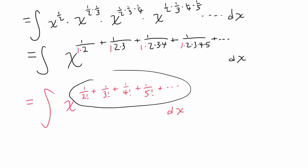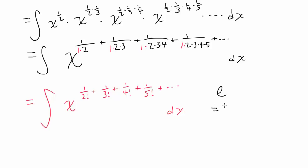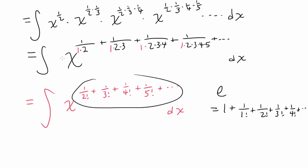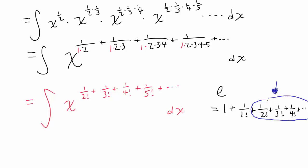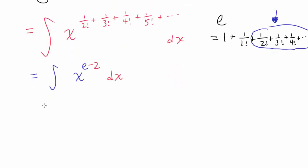Do you recognize this? We are summing up the reciprocals of factorials, and you may think of e. One of the definitions of e, using the Taylor series of e to the x evaluated at x equals 1, is 1 plus 1 over 1 factorial, plus 1 over 2 factorial, plus 1 over 3 factorial, plus 1 over 4 factorial, and so on. We have everything starting from 1 over 2 factorial, so this exponent equals e minus 1 minus 1, meaning the integrand is x to the e minus 2. Integrating x to the nth power gives x to the n plus 1 over n plus 1 plus c.